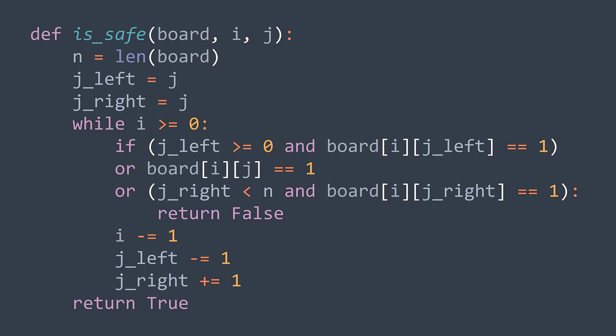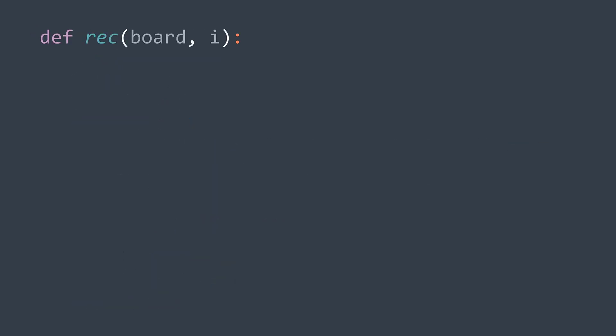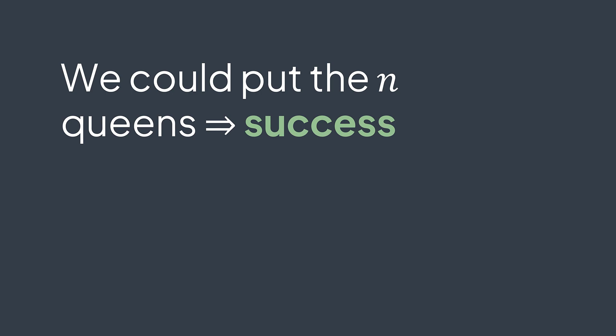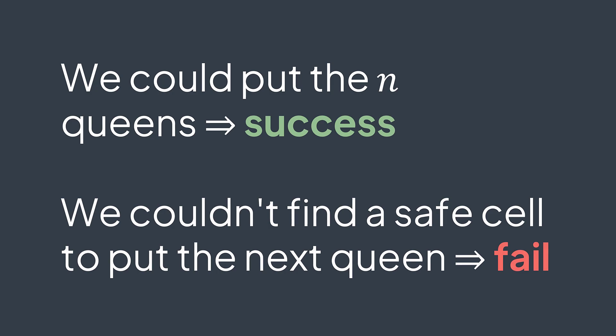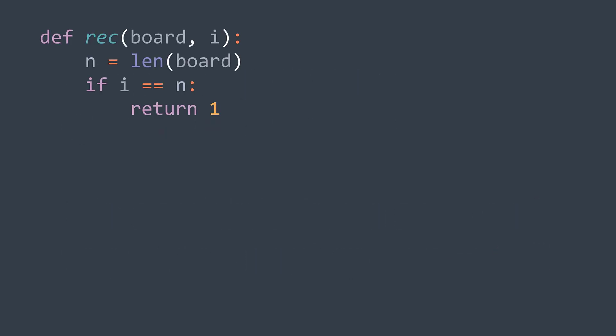The recursive function takes the board and i, the index of the current row, filling the board row by row. In backtracking we typically have two base cases: one for a valid solution and one for an invalid candidate. We know we found a valid solution when i equals n — every row has a queen — so we return 1. The second base case is implicit: when no safe cell exists in row i, no recursive call is made and 0 is returned. In code: if i == n, return 1.